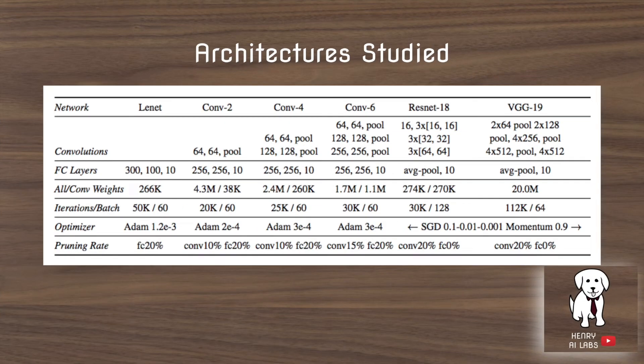So these are the architectures studied in the Lottery Ticket Hypothesis paper. The LeNet, variants of VGG, the Conv 2, 4, and 6 are just much smaller versions of VGG, and then two big networks, ResNet 18 and VGG 19. And with these big networks, they find that they have to do a learning rate warm-up heuristic trick in order to find the winning tickets. And it's not as straightforward in the bigger networks as it is in the smaller networks to find these subnetworks, the lottery ticket networks.